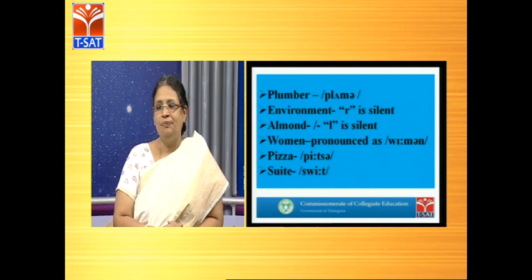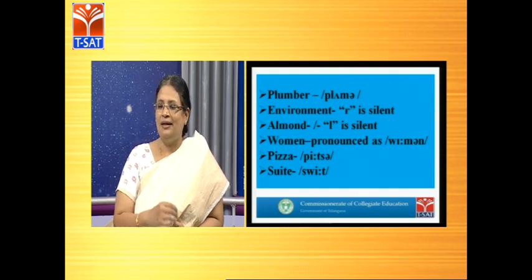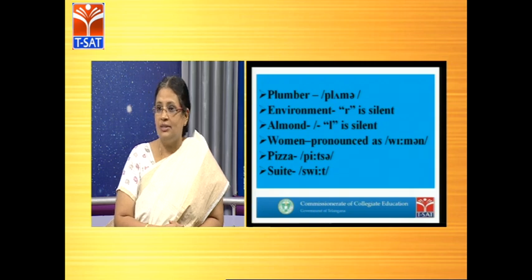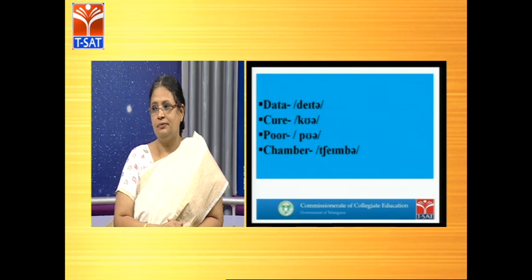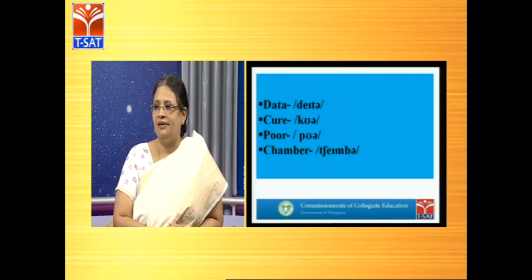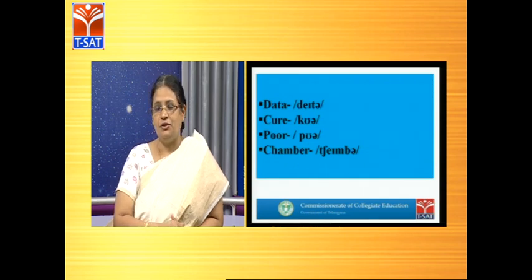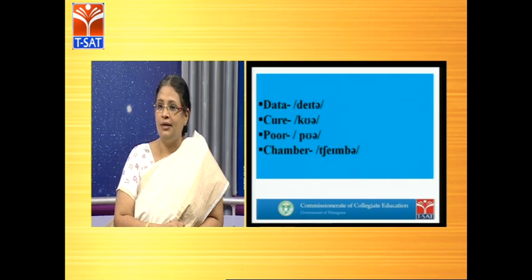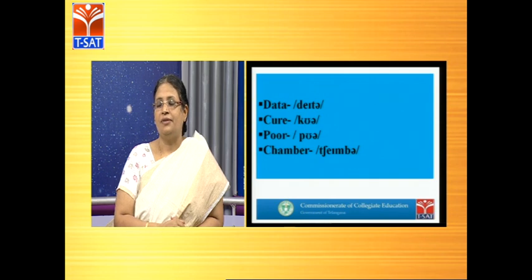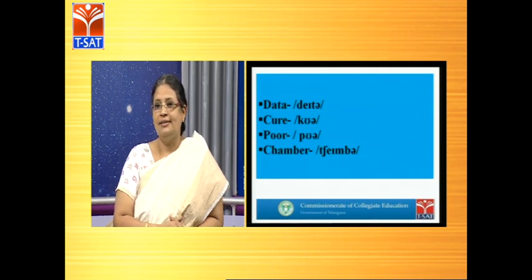When we go to hotels, the rooms are called a 'suite' — though the spelling is S-U-I-T-E, most people go by the spelling and pronounce it as 'suit', but it has to be pronounced as 'sweet'. We have the word 'data' — some people mispronounce it as 'data', but it has to be pronounced as 'data'. The word 'cure' — R is silent, so it is not 'cure'. Very often we hear students pronouncing the word 'poor' — they say 'I come from a poor family', but again the R is silent — it is 'poor'.